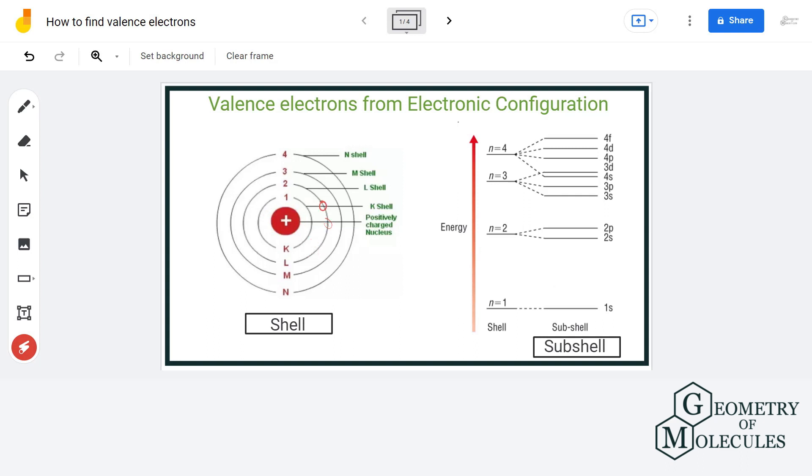So we can say that subshells are the part of shell. The first shell K has only one subshell. The second shell L has two subshells. The third shell M has six subshells and so on.